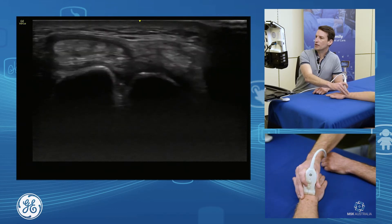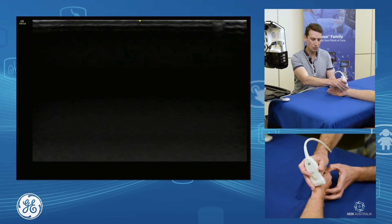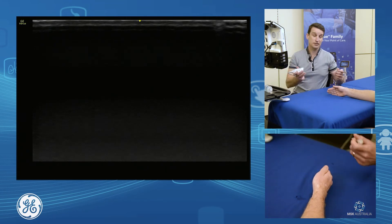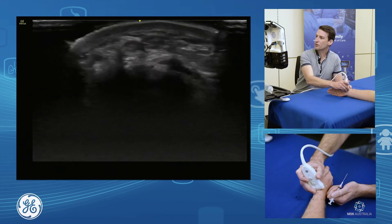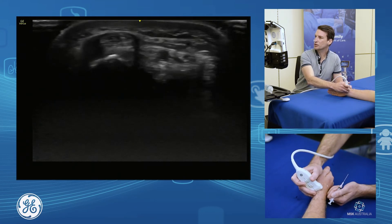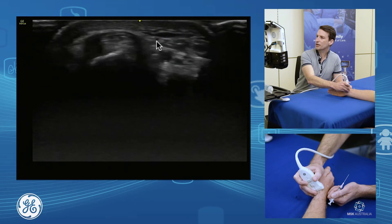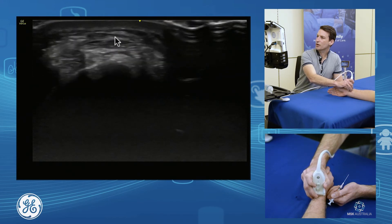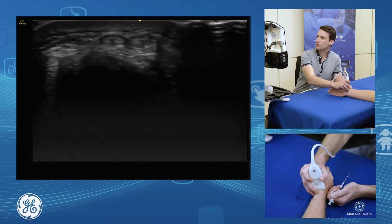Now, some injection technique. Let's start with de Quervain's and our compartment one tendons. Sitting next to our compartment one tendons is our radial artery and our superficial radial nerve — two structures we want to be aware of when injecting. On the volar side, we can see our artery and a little nerve sitting just above that, with our tendons sitting up over the bone. We've also got a little bit of nerve rolling over the tendons — these are the structures we want to be aware of.